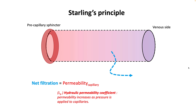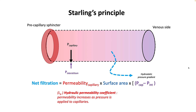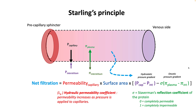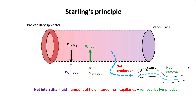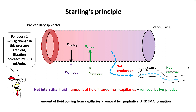To put it in a mathematical formula, net filtration equals the permeability of the capillary — this constant is your hydraulic permeability coefficient, which increases as pressure applied to the capillaries increases — multiplied by surface area and multiplied by the pressure gradient. The pressure gradient has two components: first, the hydrostatic pressure gradient (difference between capillary pressure and interstitial pressure), and second, the oncotic pressure gradient (difference between plasma oncotic pressure and interstitial pressure). Sigma here is the Staverman's reflection coefficient of the protein: if zero, the protein is completely permeable; if one, it is completely impermeable. Therefore, the net interstitial fluid that accumulates depends upon the amount filtered from capillaries minus that removed by the lymphatics. If fluid coming from capillaries is more than what lymphatics can remove, this results in edema formation.